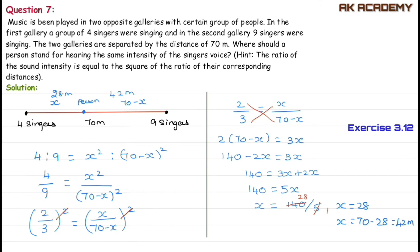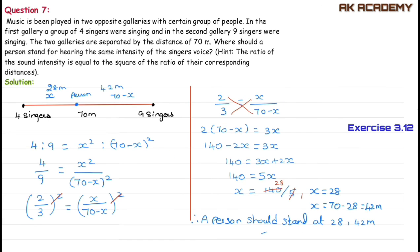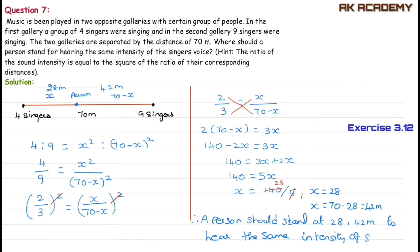Therefore, a person should stand at 28 meters from the 4-singer gallery and 42 meters from the 9-singer gallery to hear the same intensity of the singers' voice. That completes this problem. Thank you.